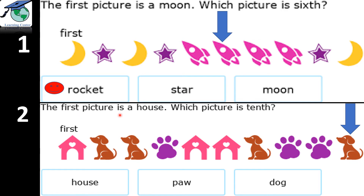The first picture is the house. Which picture is the tenth? You can see the first picture is the house, so which is the tenth? Let us count: first, second, third, fourth, fifth, sixth, seventh, eighth, ninth, and tenth. The tenth picture is the picture of a dog. So you will put a happy face.